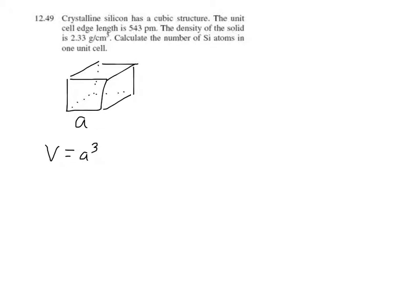So what else are we told in the problem? We're told the density. The density is 2.33 grams per centimeter cubed, and the cool thing about density is it's intensive. So that means that the density of the cube is the same as the density of a giant cube of silicon. We know density is mass over volume, and so that means that we can solve for the mass by taking the density and multiplying it by the volume.